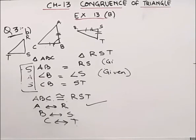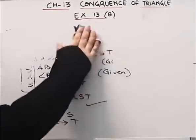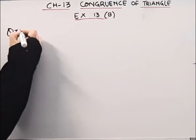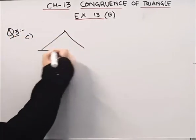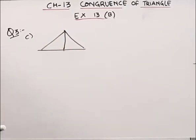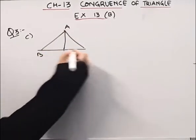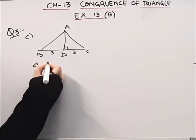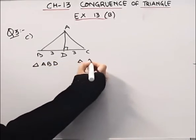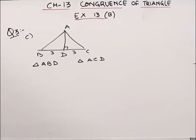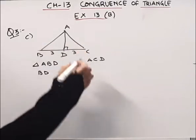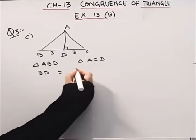Now we will come to the C part of this question. In question number 3, C part, we have a triangle with points A, B, C, and point D. These two sides are 30-30. Here we have BD is equal to DC.